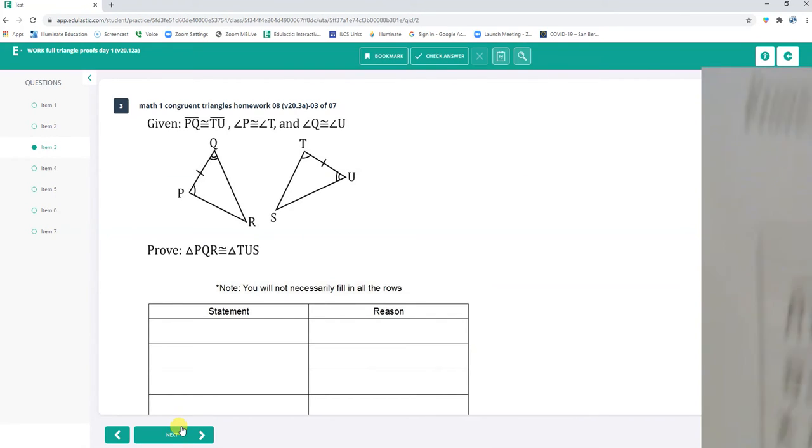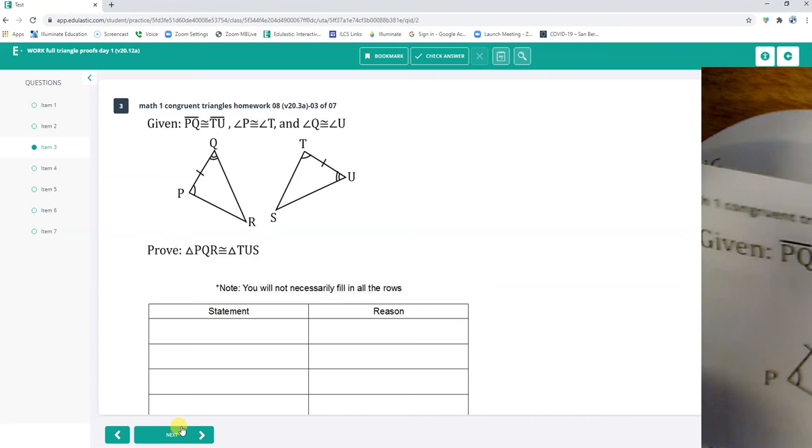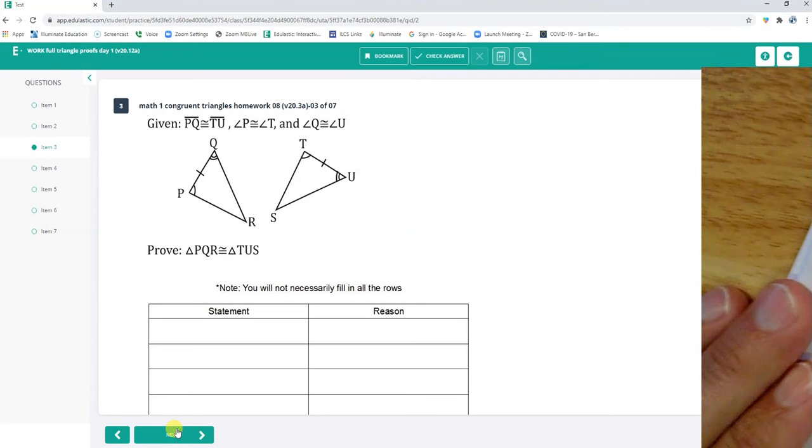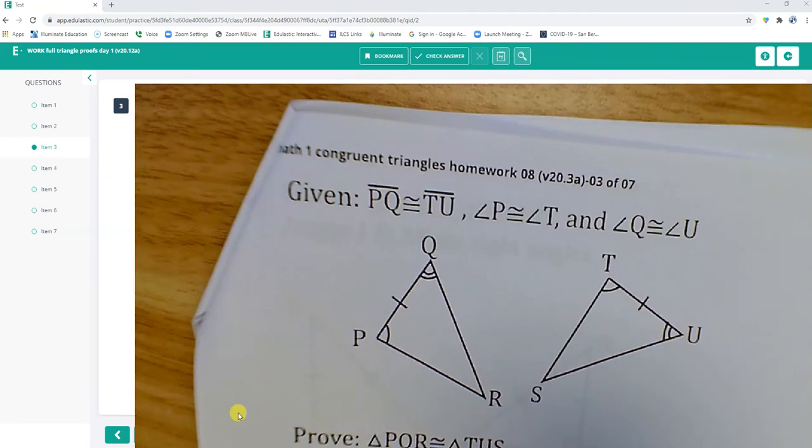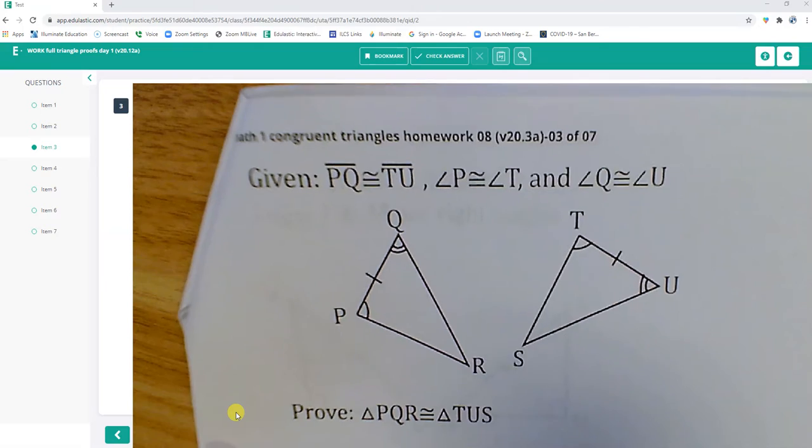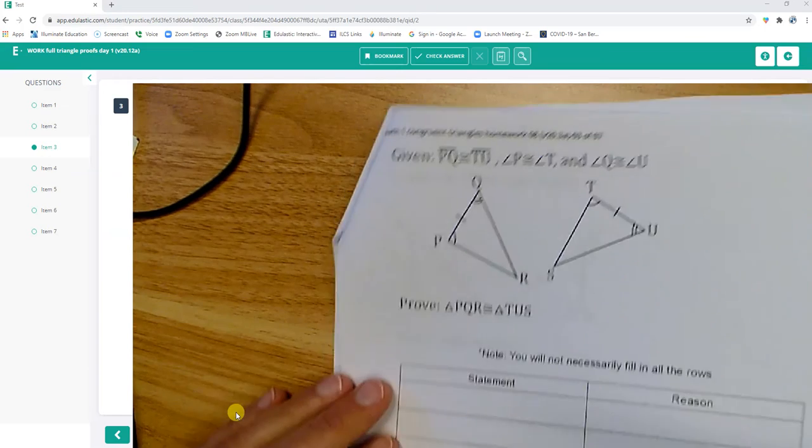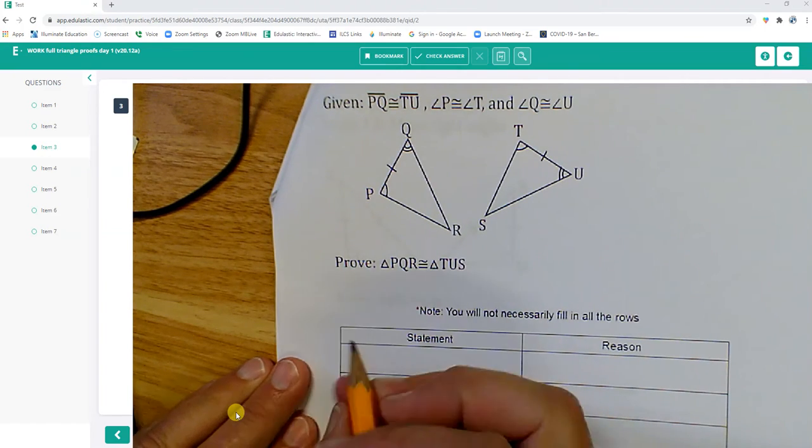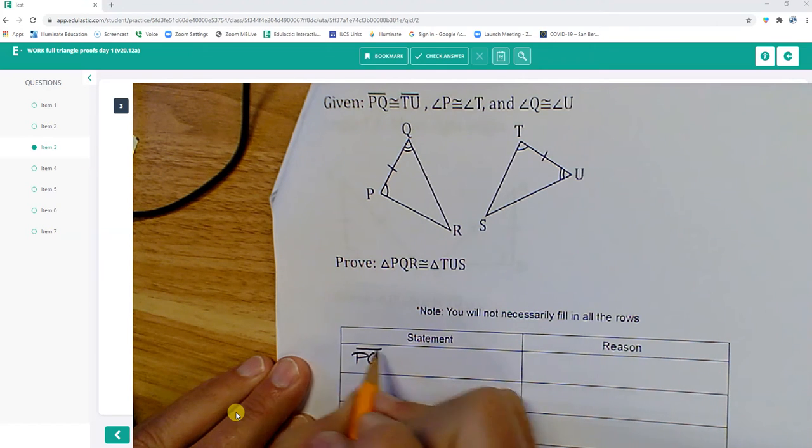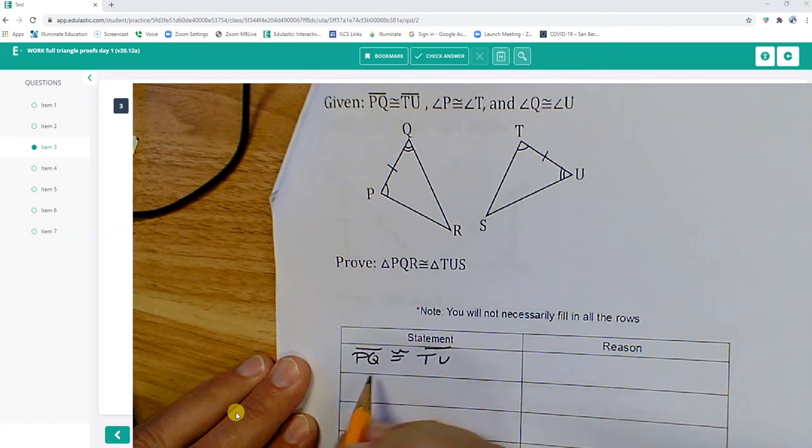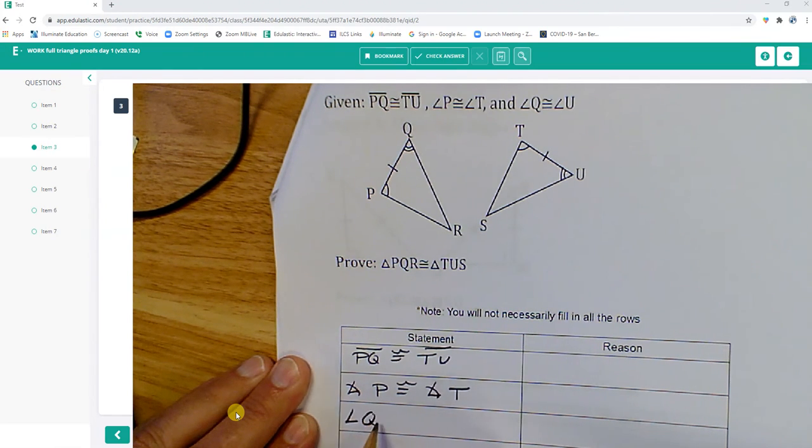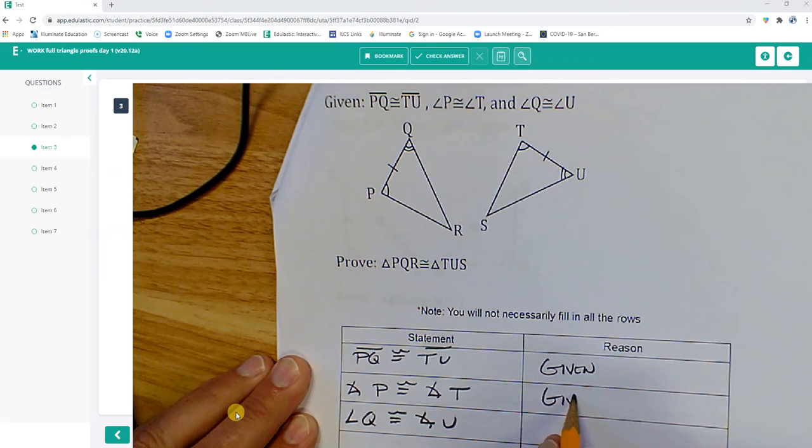Going on to the next one. Number three. Going to start by getting those three givens into the proof. PQ, TU.